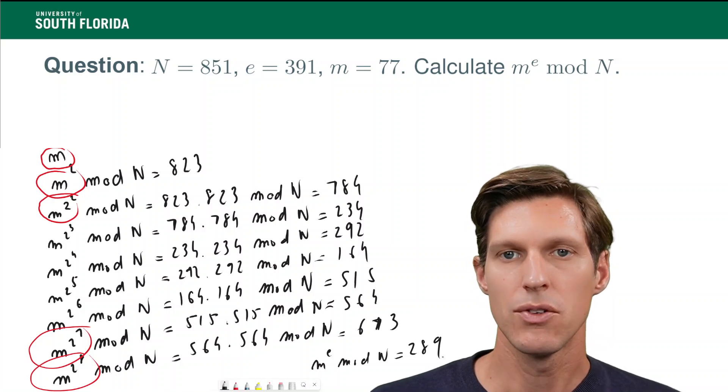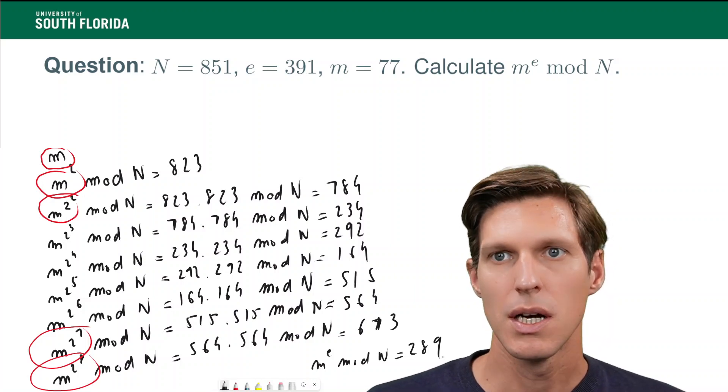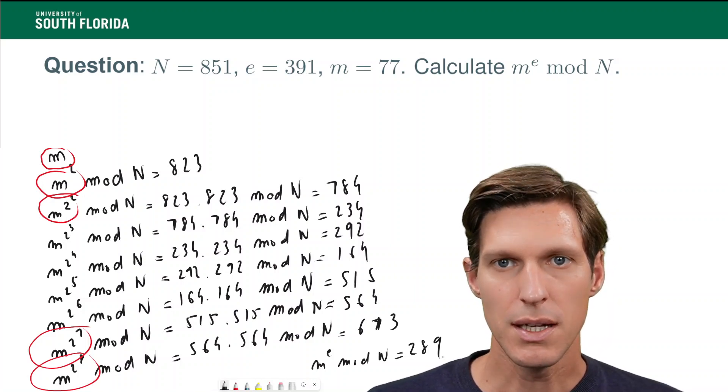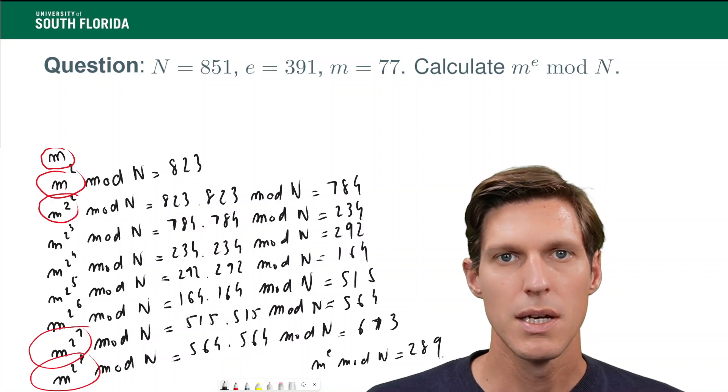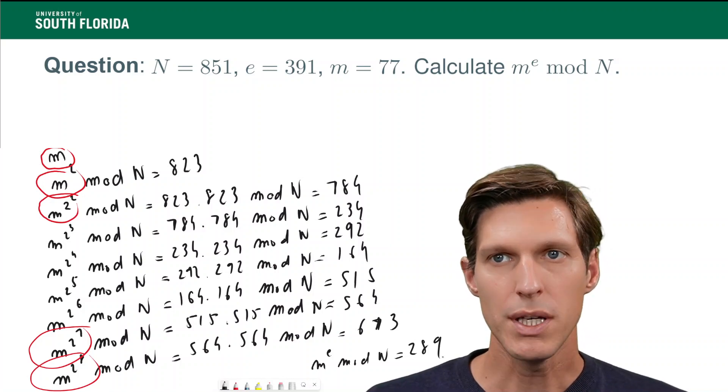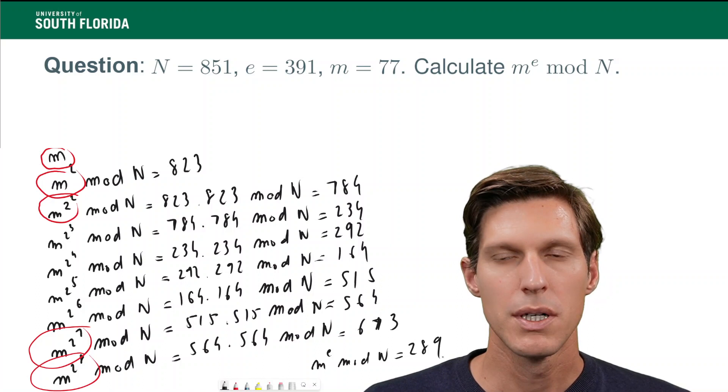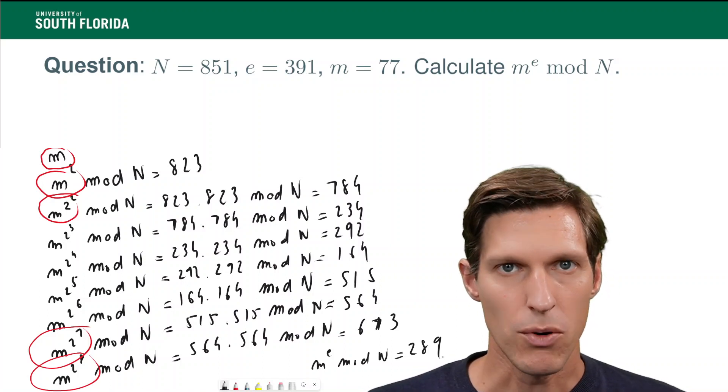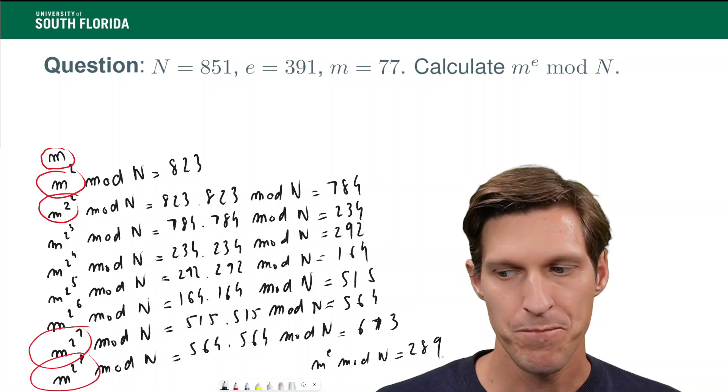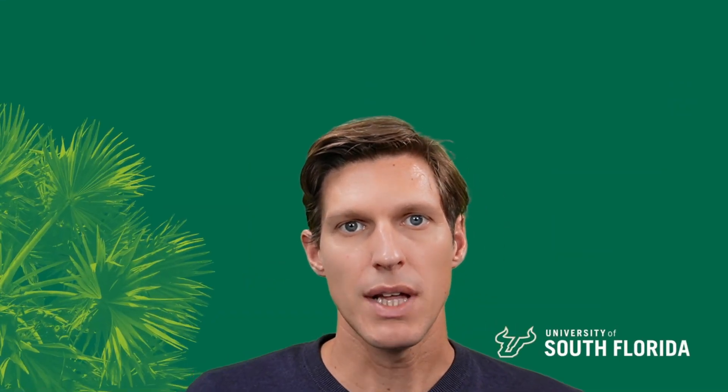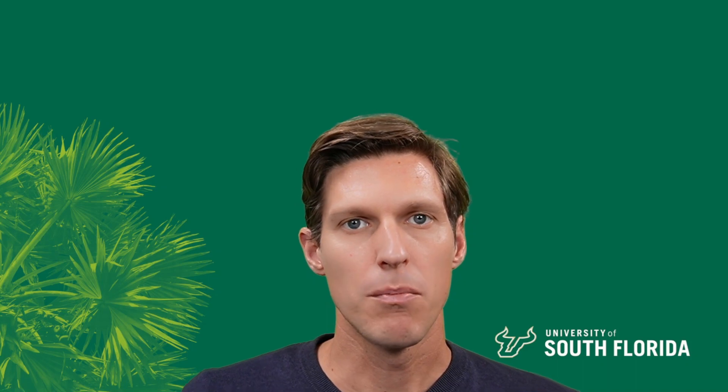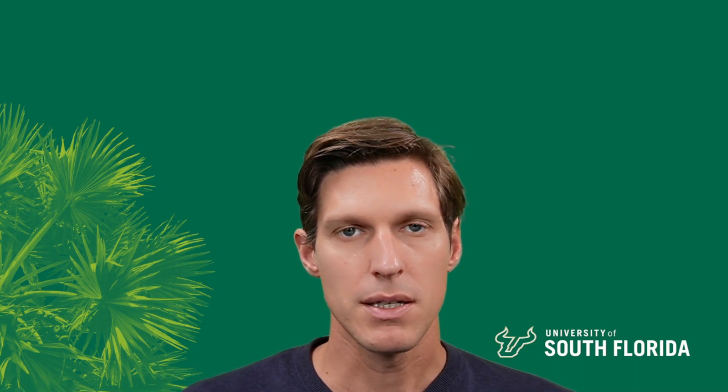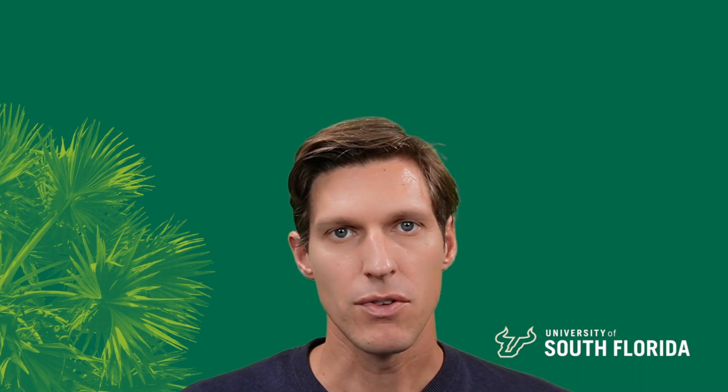So, you can see that the number of multiplications that is needed in order to raise m to the power e is much lower than e. You don't have to perform e multiplications to raise to the power e. In fact, it's more logarithmic. So, that's it. Now, you know how to perform binary exponentiation in order to evaluate the RSA function. Thank you for listening.